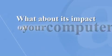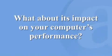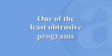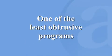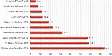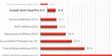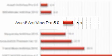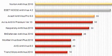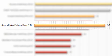What about its impact on your computer's performance? Our performance testing found Avast 5.0 to be one of the least obtrusive programs. Avast performed especially well in our memory use testing, requiring the least memory of any major antivirus program, needing only 5.4 megabytes. Avast finished third overall in our five performance tests this year, just behind performance leaders Norton and Nod32.